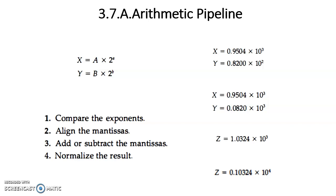Previously, we discussed pipeline in general, which could be applied to any sequential process. But when we call it arithmetic pipeline, we are restricting this to only arithmetic operations. Arithmetic pipelines are used in very high speed computers to perform floating point operations, multiplication of huge fixed point numbers, or for scientific problems. This pipeline concept is to increase the speed, which is why very high speed computers use arithmetic pipeline. Here we can see two floating point numbers x and y.